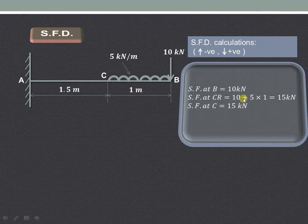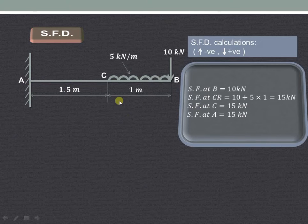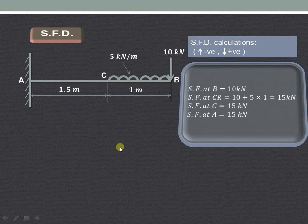So the total load will be 15 kN. The same value applies at point C as well, because at point C there is no additional load acting. Shear force at point A is also the same, because between C and A there is no other force or load acting.